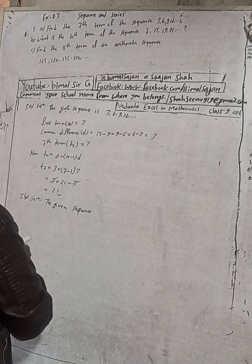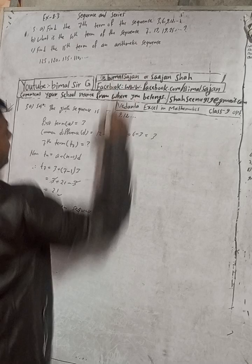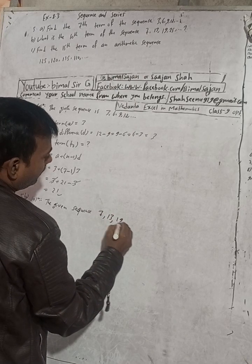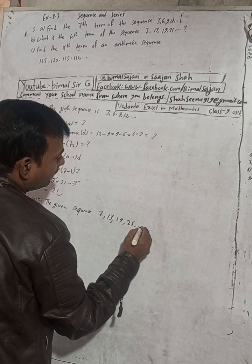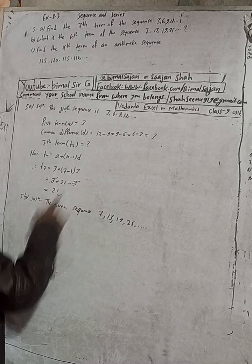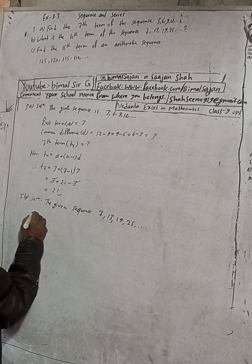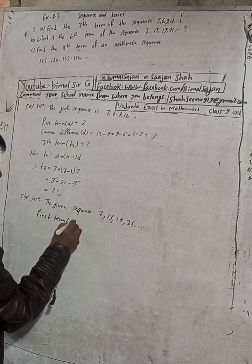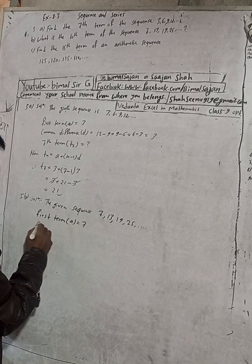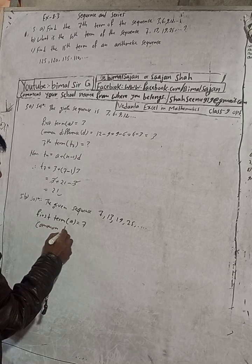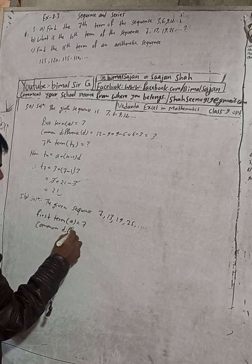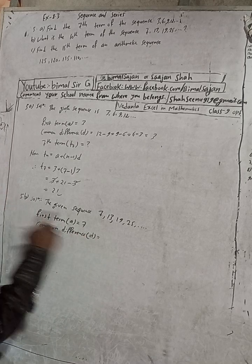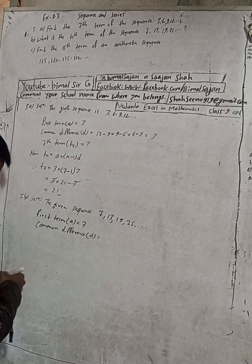For 5B, we need to find the 8th term of the sequence 7, 13, 19, 25. The first term, indicated by A, is 7.